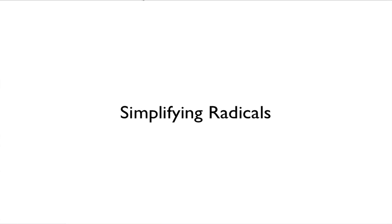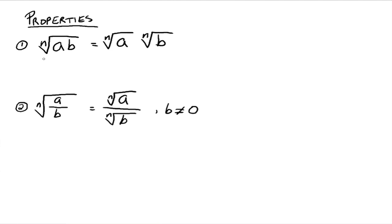This video is on simplifying radicals. First, make note of a couple of properties. Property 1 says that we have the root of a product, and that can be written as the product of the individual roots — and it works the other way as well. This is what allows us to say the square root of 2 times the square root of 3 equals the square root of 6.